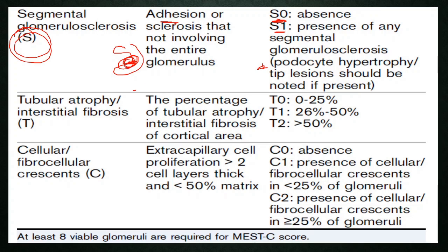IFTA refers to the percentage of tubular atrophy and interstitial fibrosis of the cortical area. T0 is given if less than 25%, T1 if 25-50%, and T2 if more than 50%. The last parameter, introduced in 2016, is the presence of cellular or fibrocellular crescents — not fibrous crescents.